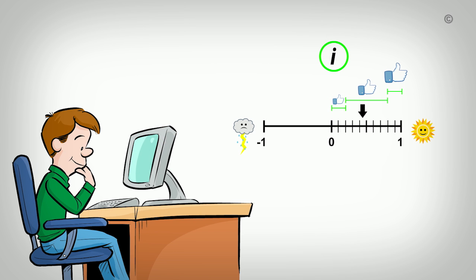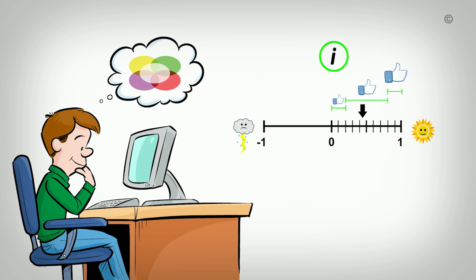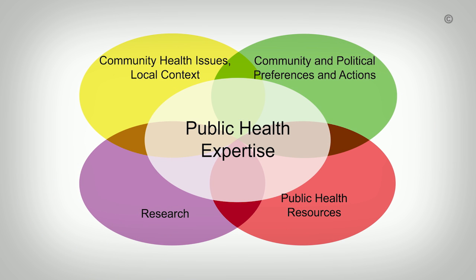Besides the research, you need to consider other factors before making your decision. NCCMT's model of evidence-informed decision-making helps you consider all the sources of evidence that can influence your decision, not only research, but also community health issues and your local context, community and political preferences and actions, and public health resources available to you. Your own public health expertise will help you incorporate all these sources of evidence into your decision.